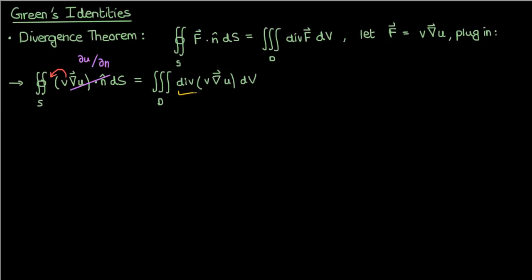On the right-hand side, we can expand out the divergence of v del u using the product rule of differentiation, since a divergence is kind of like a derivative. Once we do that, we'll get del v dot del u plus v times the Laplacian of u.